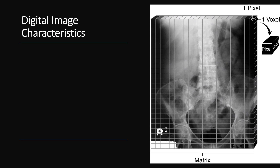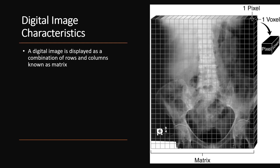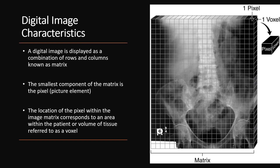Let's take a look at the characteristics of a digital image. We have a representation of an abdomen or KUB superimposed over a matrix. A digital image is displayed as a combination of rows and columns known as a matrix. The smallest component of the matrix is the pixel, which is a contraction for picture element. The location of the pixel within the image matrix corresponds to an area within the patient, or a volume of tissue, referred to as a voxel. We know the exact intensity recorded and location of that intensity in rows and columns, which combine to create an image.